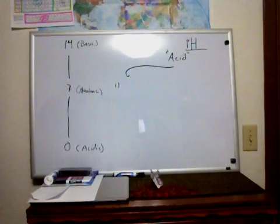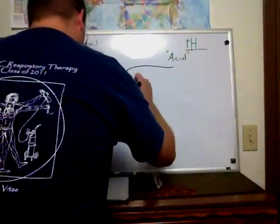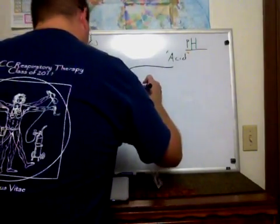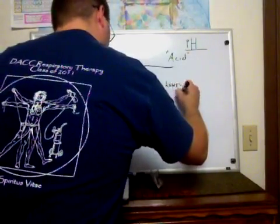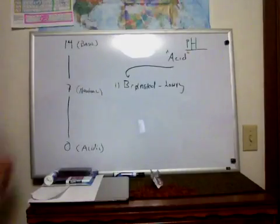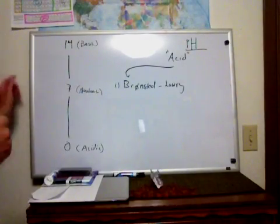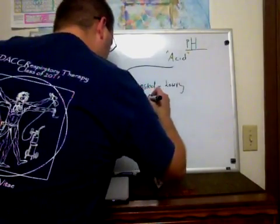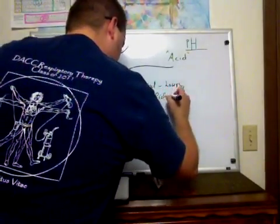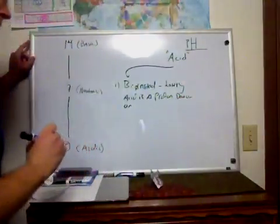And that is something called the Bronsted-Lowry, B-R-O. I hope I spelled that right. Bronsted-Lowry. And what the Bronsted-Lowry definition of an acid says is basically an acid is a proton donor or a hydrogen ion.